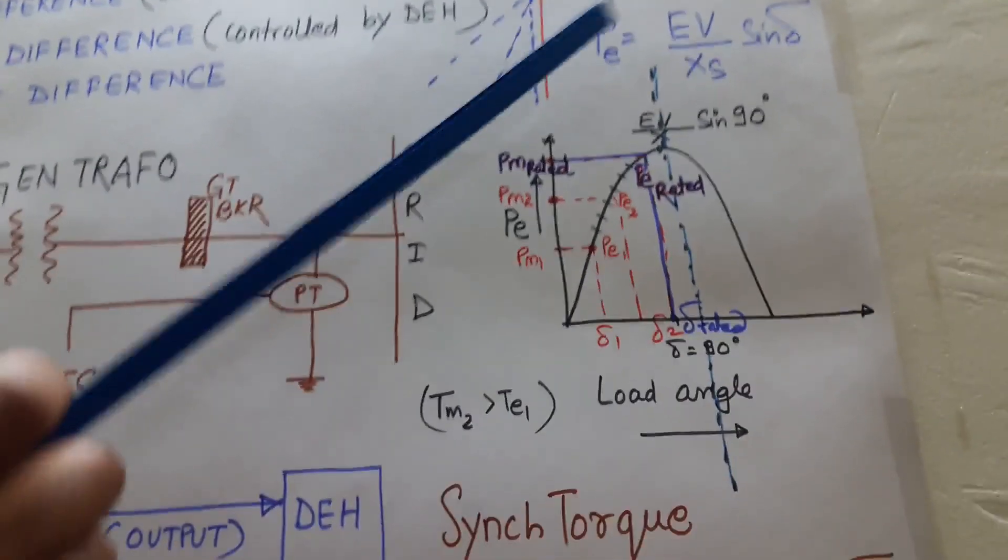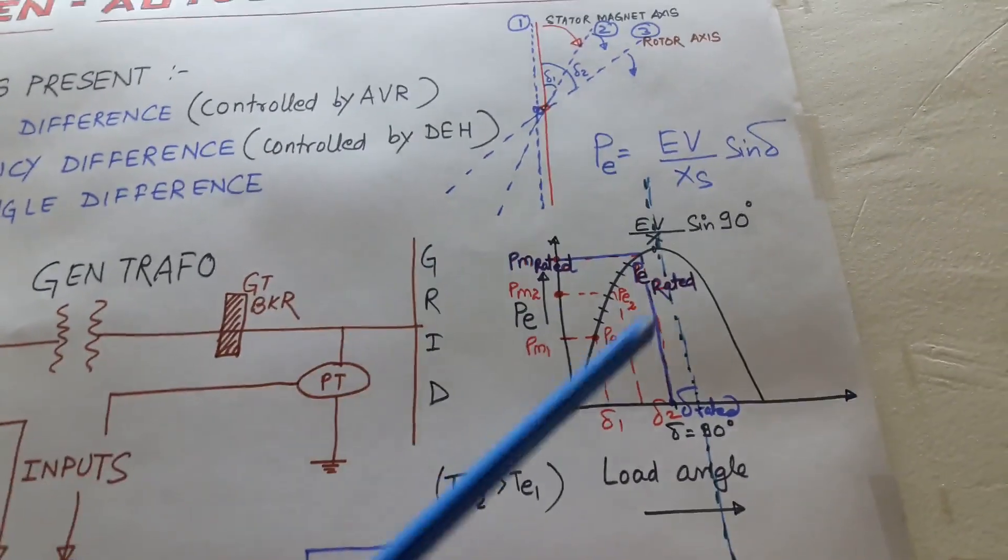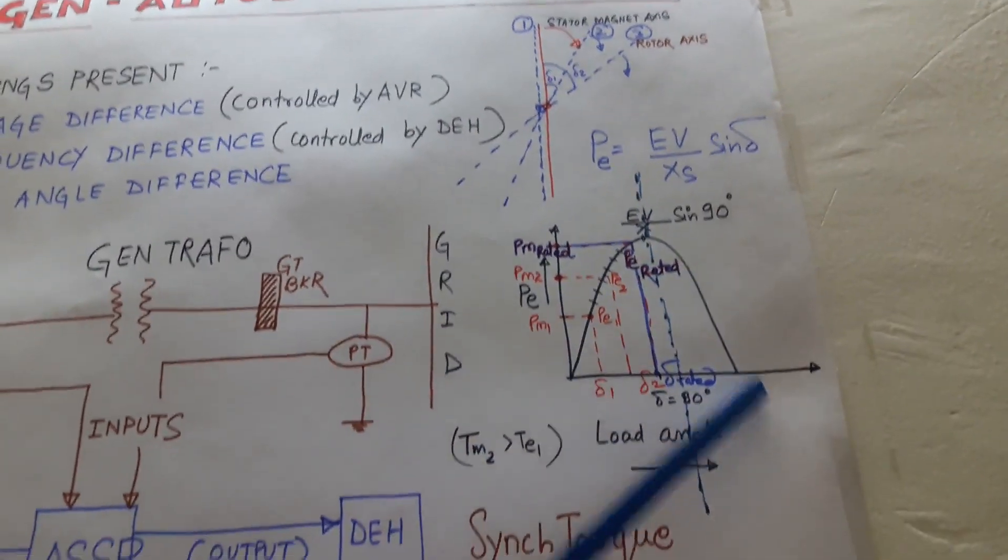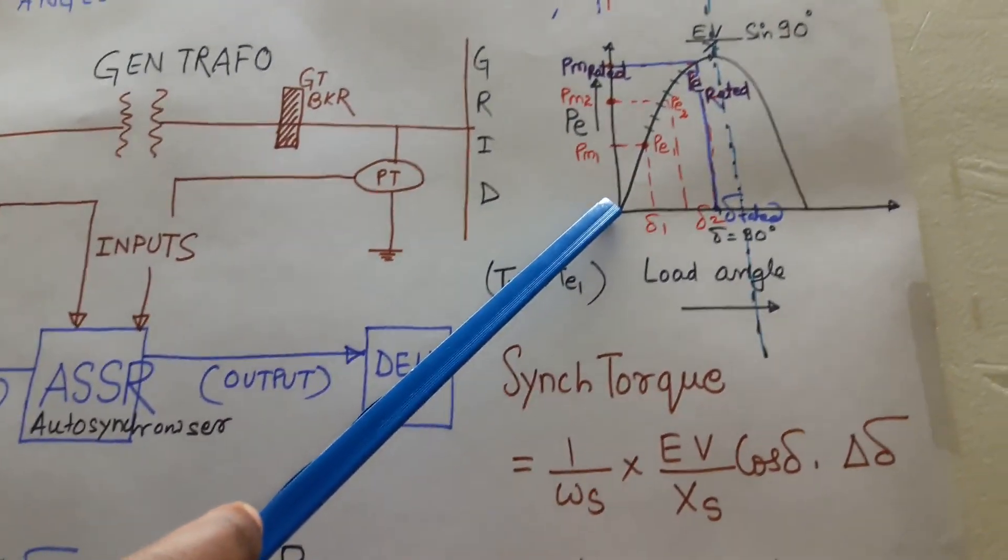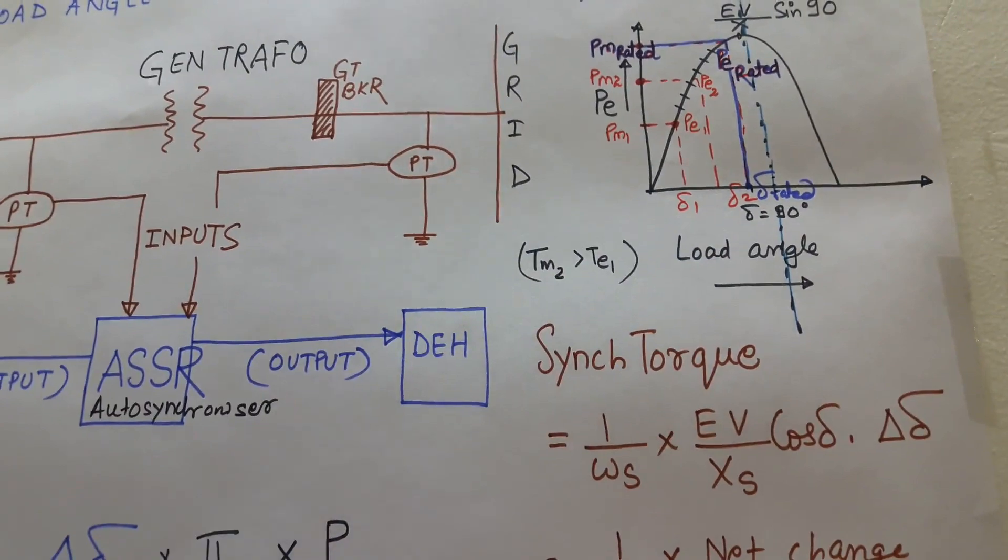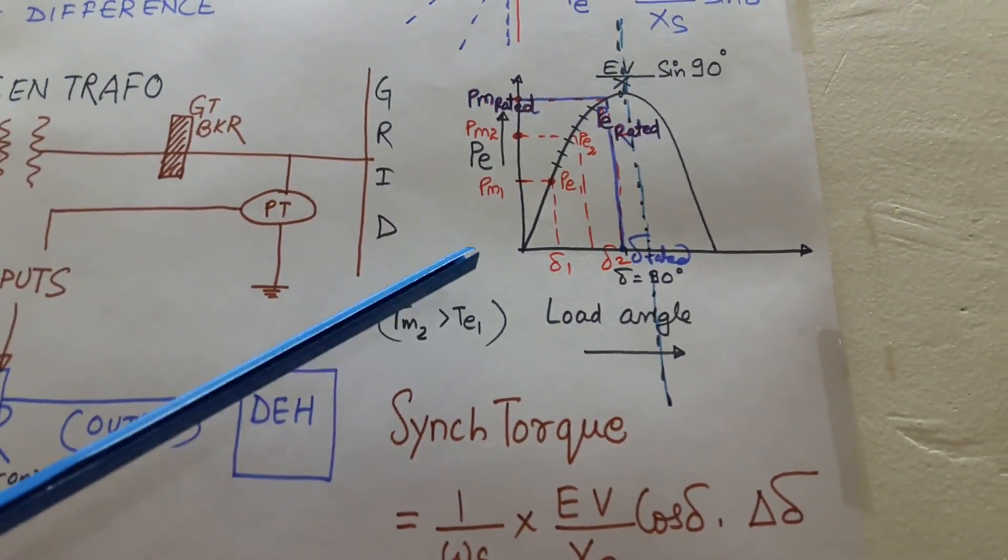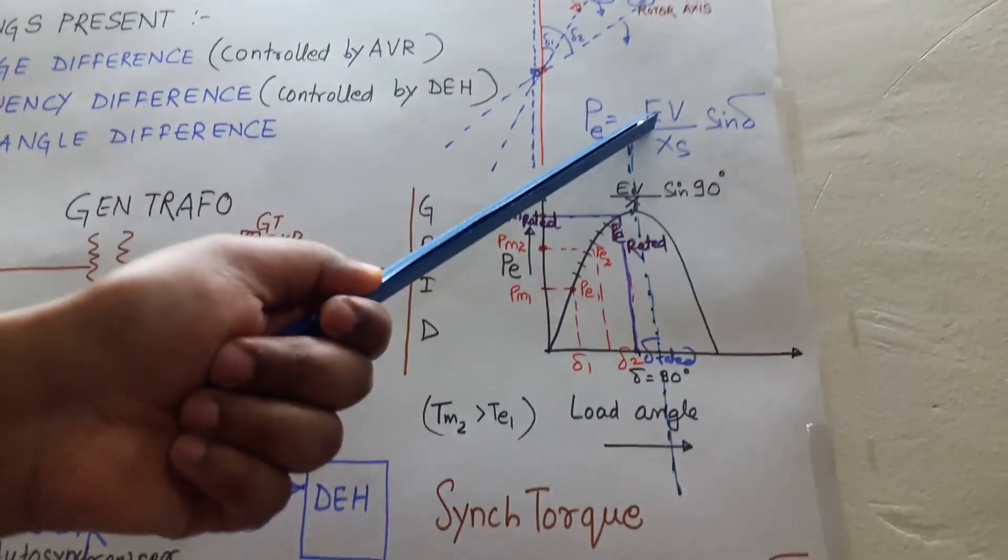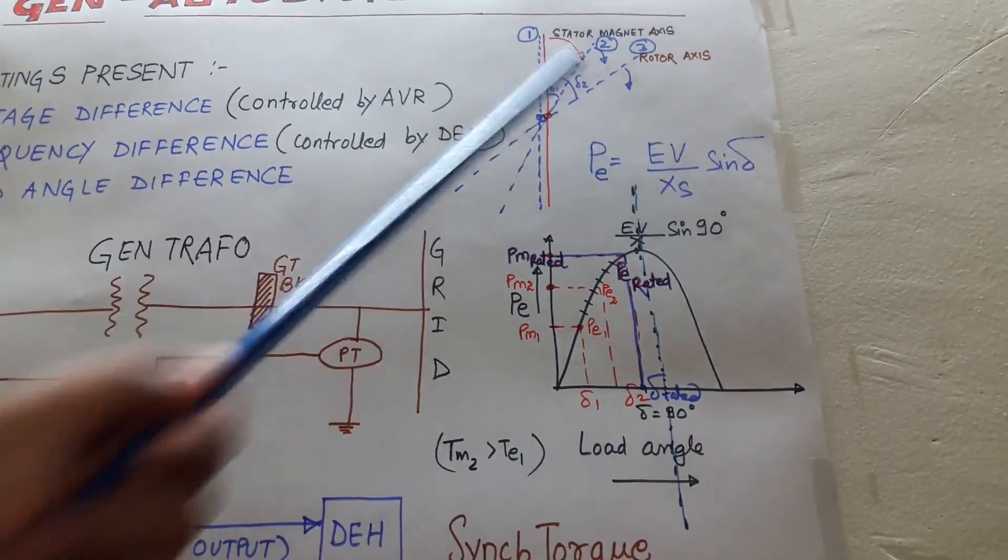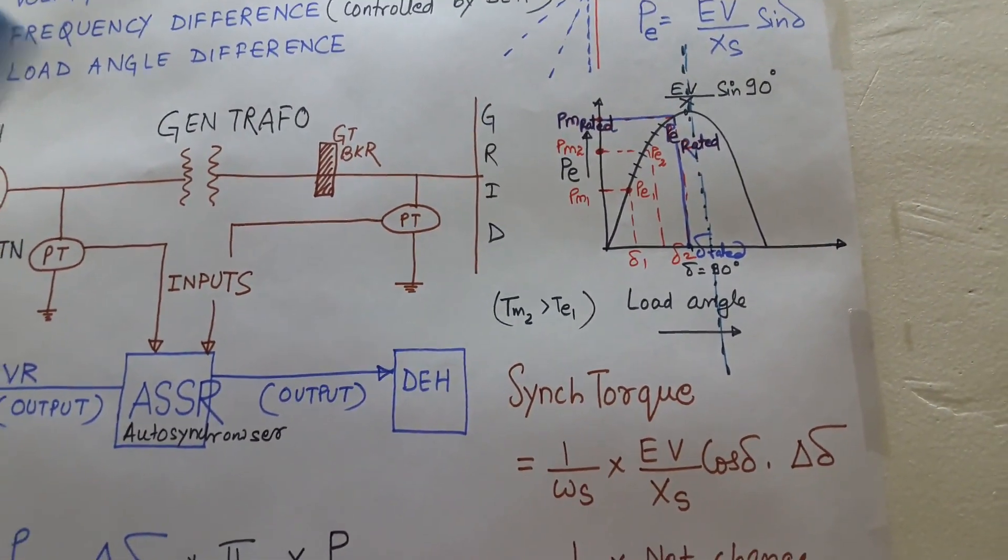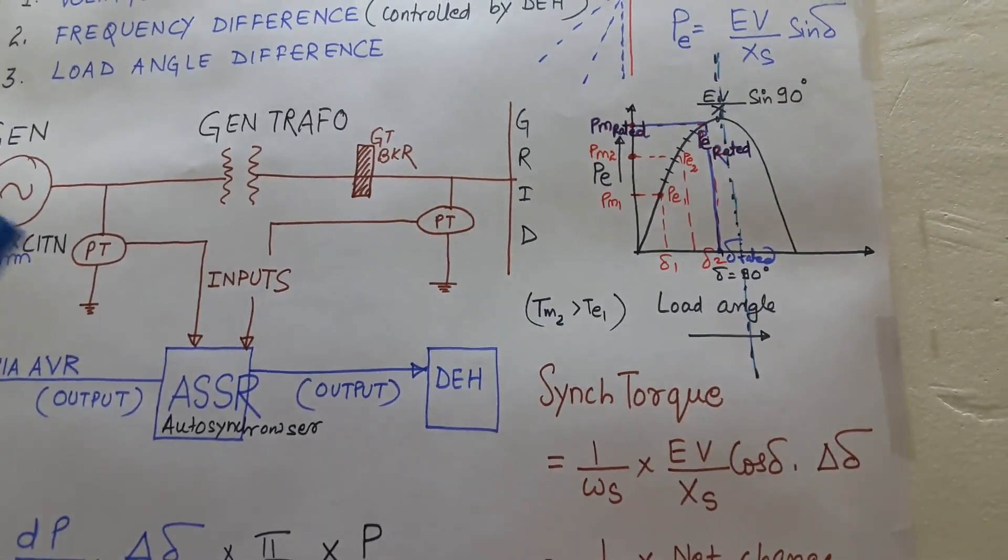So if I will plot this equation in delta and P plane, I will get a sinusoidal curve like this. Now let me explain what is load angle. One definition I have explained just now: it is angular deviation between E and V. The other definition is it is the angular displacement between stator magnetic axis and rotor axis.